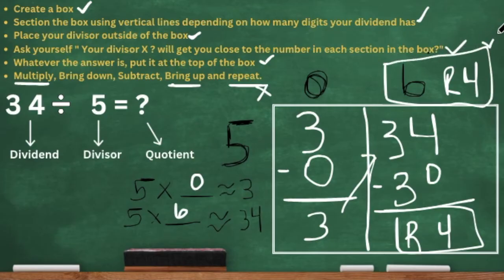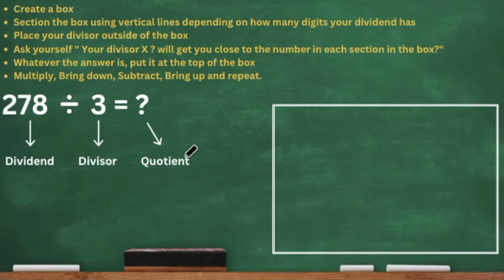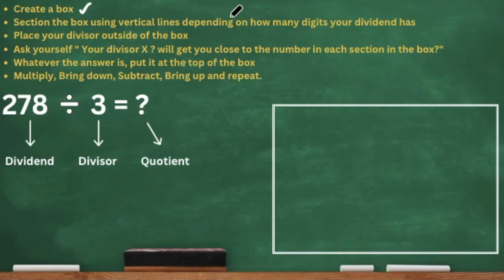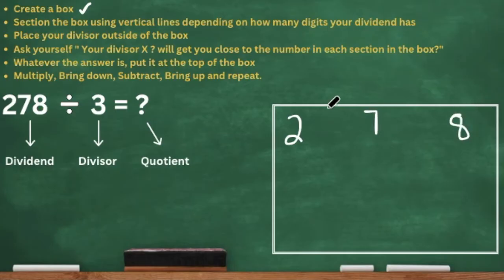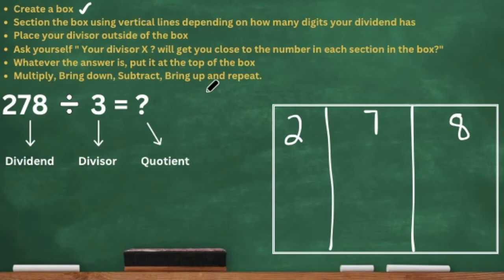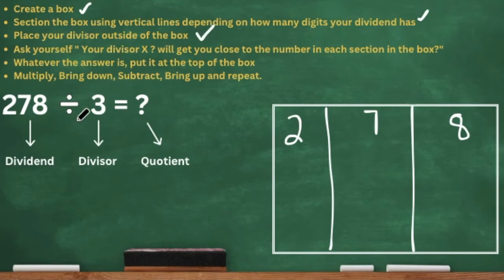I know this is a lot of steps, but don't worry — we're going to try another one. Here is 278 divided by 3. Before we had a two-digit by one-digit problem; now this one is a three-digit by one-digit. We created our box, and now we section it off using vertical lines depending on how many digits our dividend has. Our dividend 278 has three digits, so I put the 2, 7, and 8 inside with lots of space between each number — very important so your work doesn't look cluttered. Next, we place our divisor, which is 3, right outside of the box.